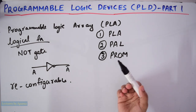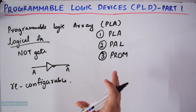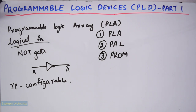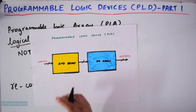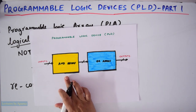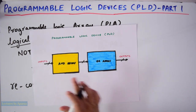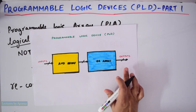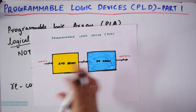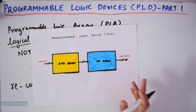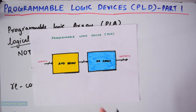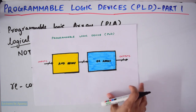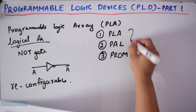Programmable logic devices or PLDs are typically built with an array of AND gates and an array of OR gates. This is the AND array and this is the OR array. These are the inputs and these are the outputs. The cut means that there are many input/output lines. Depending on whether the AND array or the OR array — whichever is programmed — they are classified into these three types.